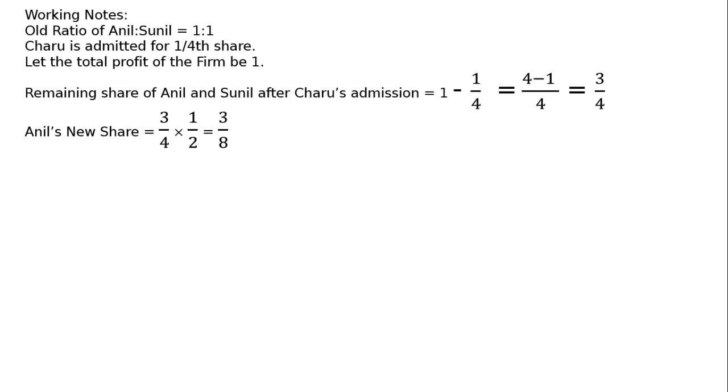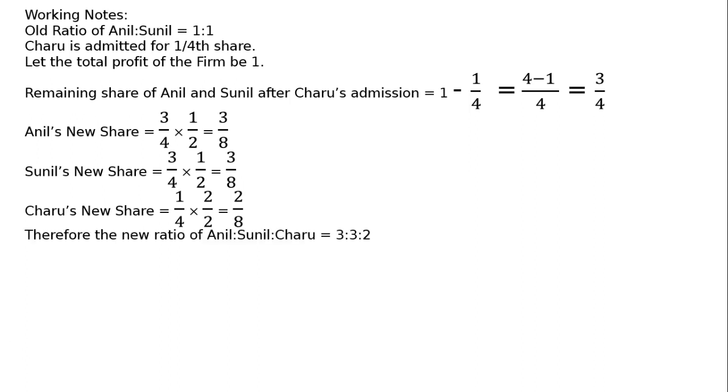Now, Anil's share: 3/4 half is equal to 3 by 8. The first half is equal to 1/2. We take the value of 3 by 4. The same thing, if we take the value of 1/2, this will be equal to 1/2. Multiply 1/2 by 1/4, we will make 2 by 8. Now what is the new ratio of Anil? 3 to 3 to 2.